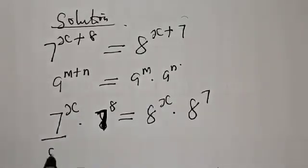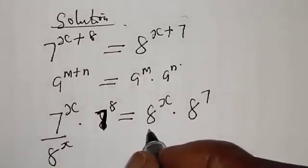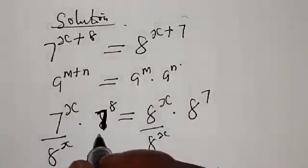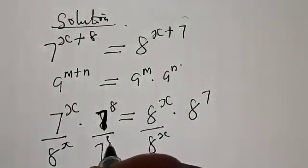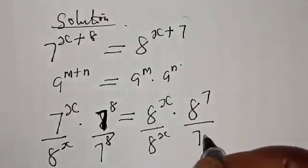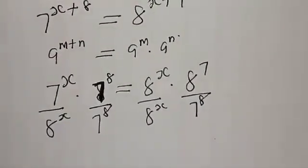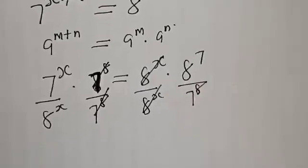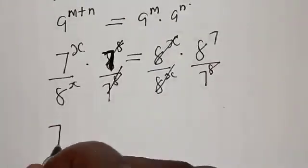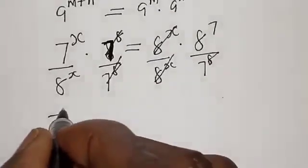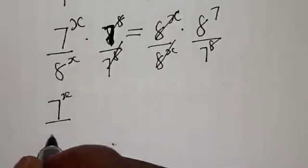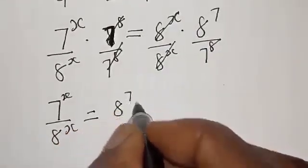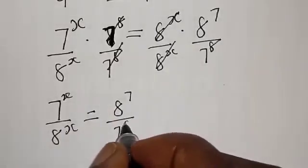Then let's divide both sides by 8 raised to power x and also by 7 raised to power 8. Therefore, we have 7 raised to power x over 8 raised to power x is equal to 8 raised to power 7 over 7 raised to power 8.